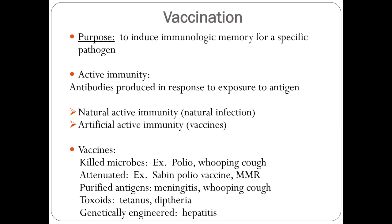For coronavirus, we are developing therapeutic treatments where we take blood from recovered coronavirus patients, purify it, and inject the antibody into a new patient — that is called artificial passive immune. But when we develop a vaccine, that is called artificial active immune.